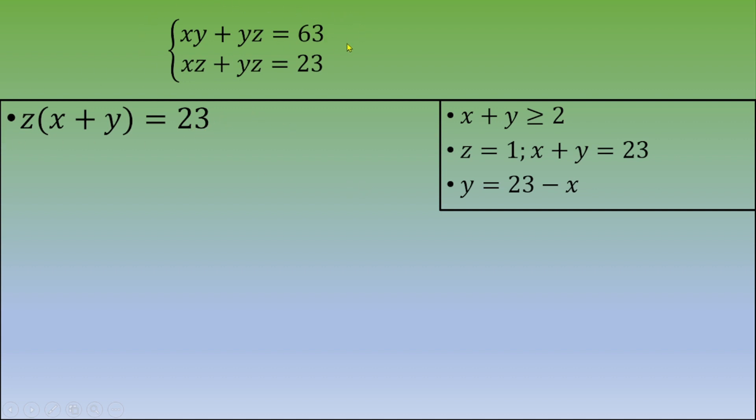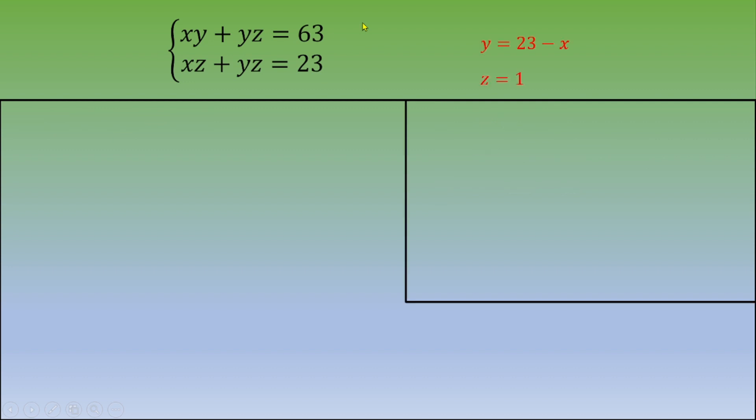Equation number one. We see we can factor by y. So let's do that. y times (x plus z) equals 63. We know the value of z. And instead of y, we can write down 23 minus x. So now we're going to distribute and we've got 23x minus x squared plus 23 minus x minus 63 equals zero.